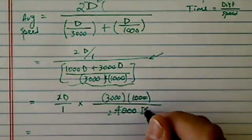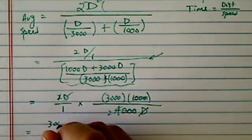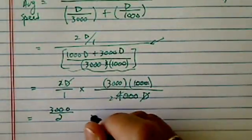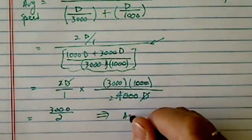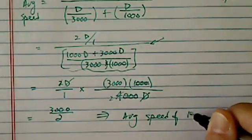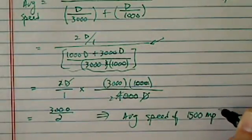So I really have d cancels. I have 3,000 divided by 2, which gives me average speed of 1,500 miles per hour.